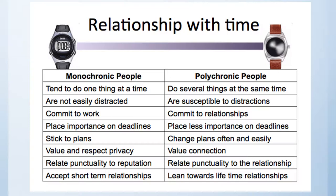Many of our students come from places where time is polychronic. They do several things at the same time, are susceptible to distractions, commit to relationships rather than to work, place less importance on deadlines, change plans often and easily, value connection, relate punctuality to relationships, and lean towards lifetime relationships.